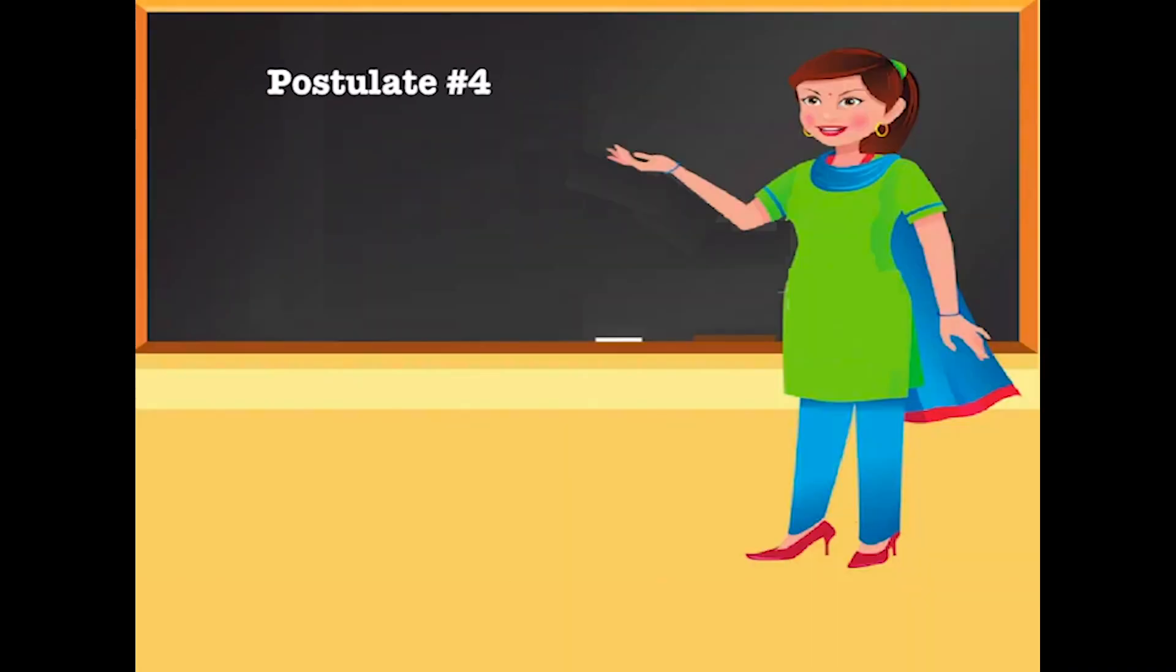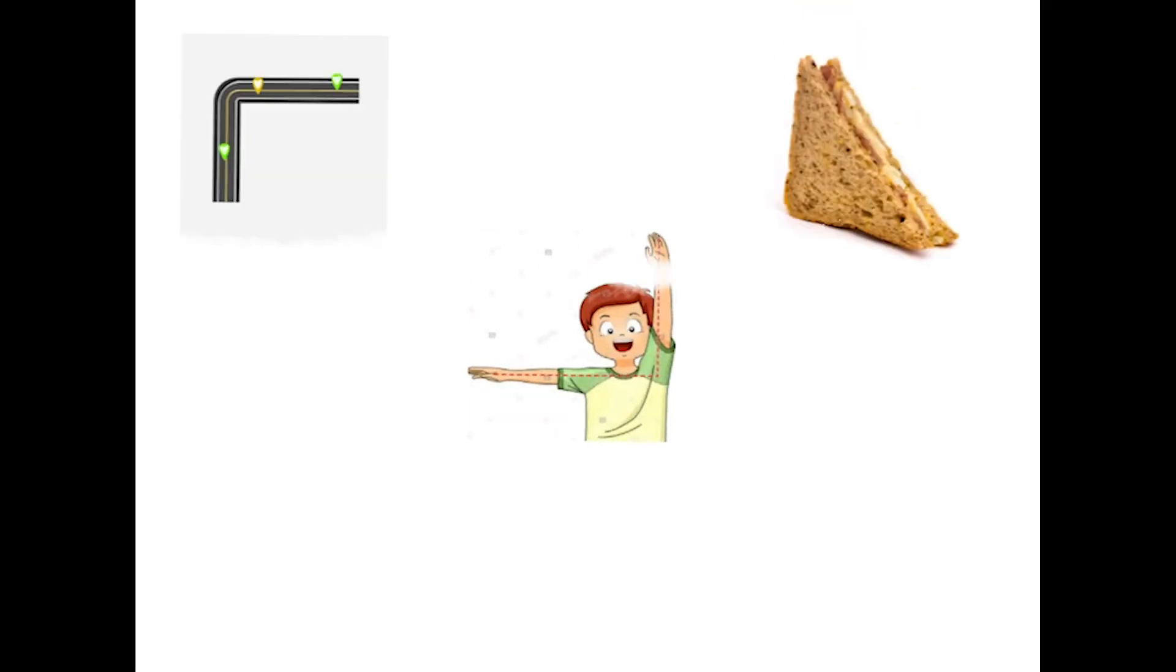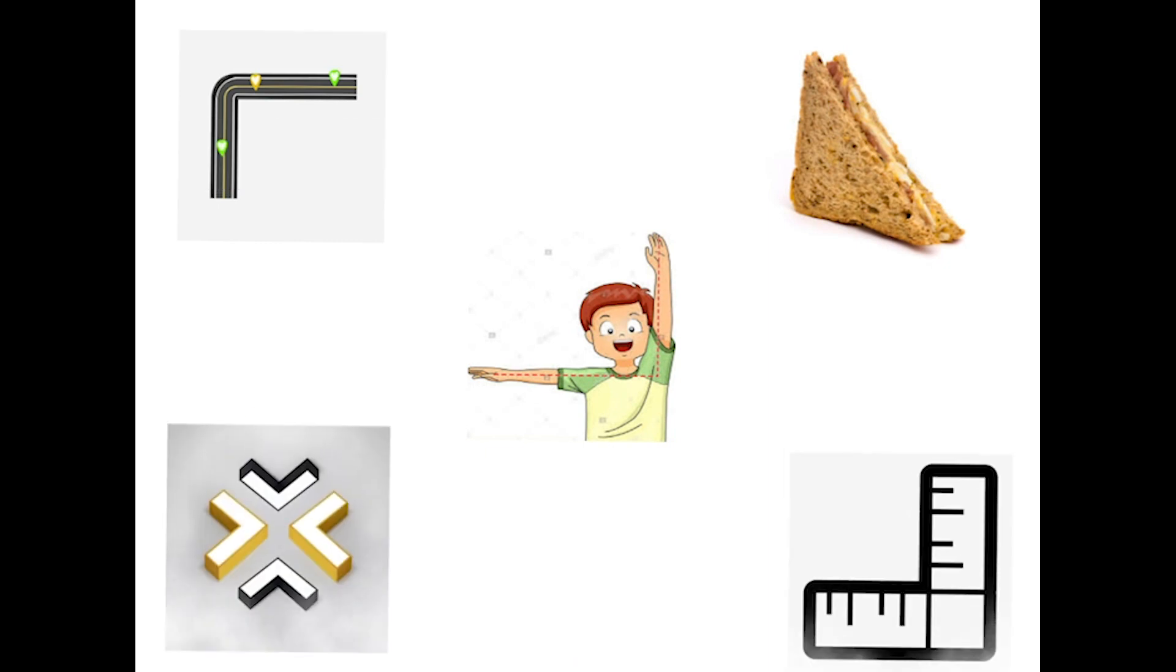Now let's look at postulate 4. It states that all the right angles are equal. So now all these right angles are equal to each other since they are all 90 degrees.